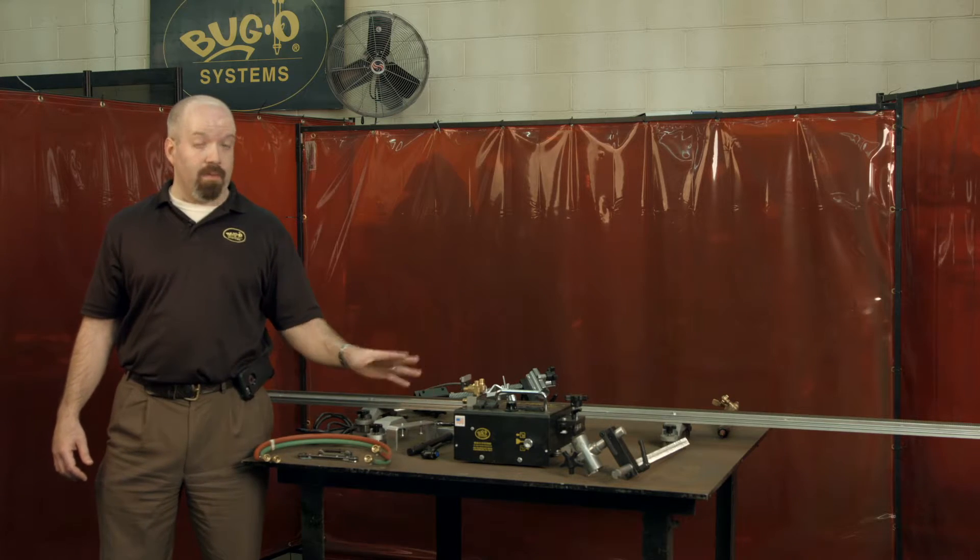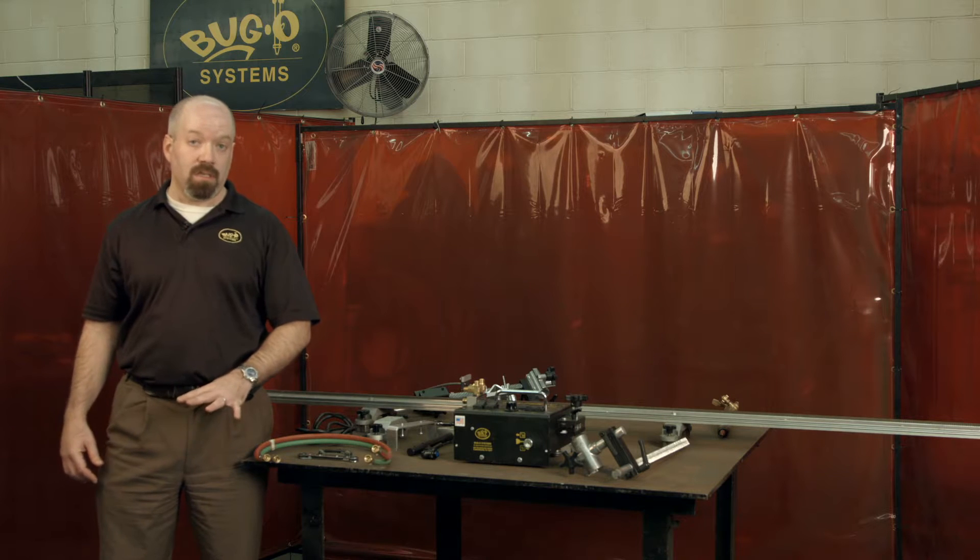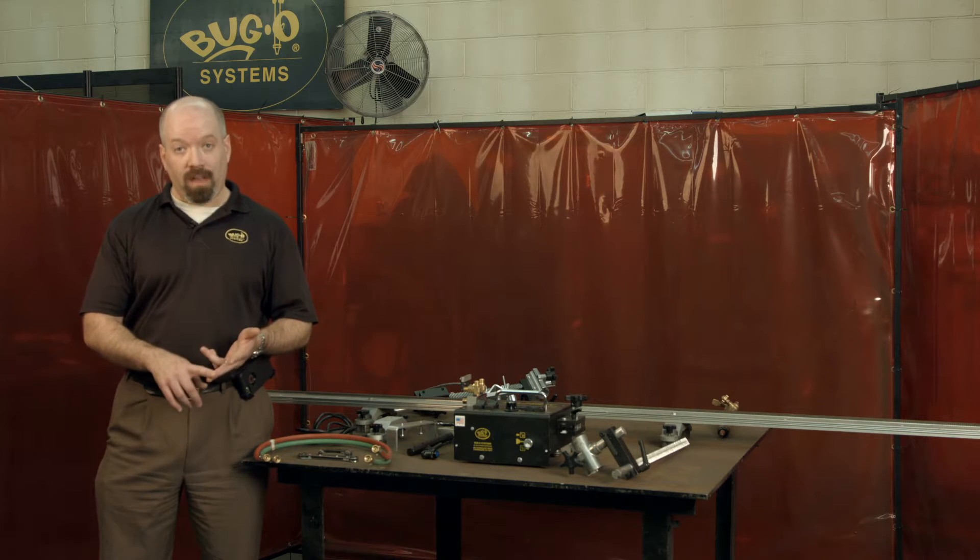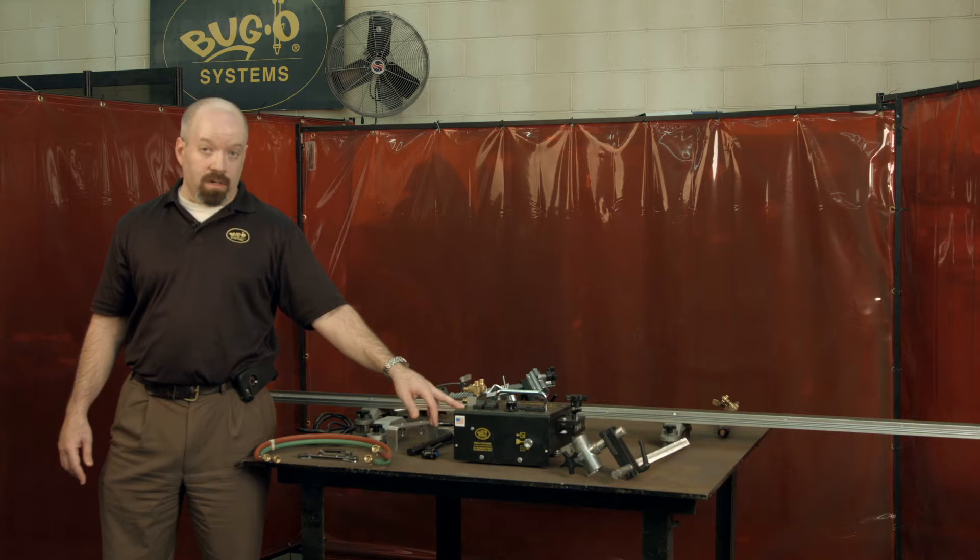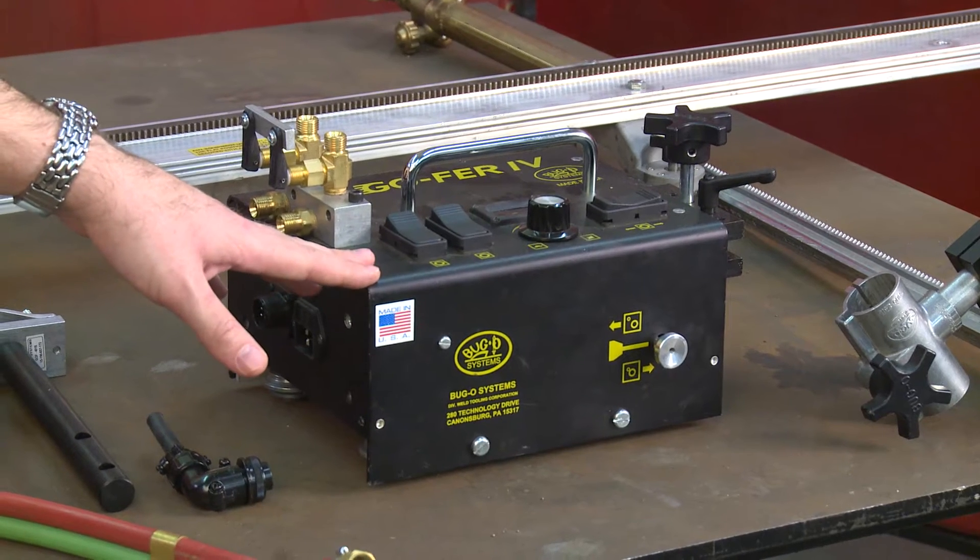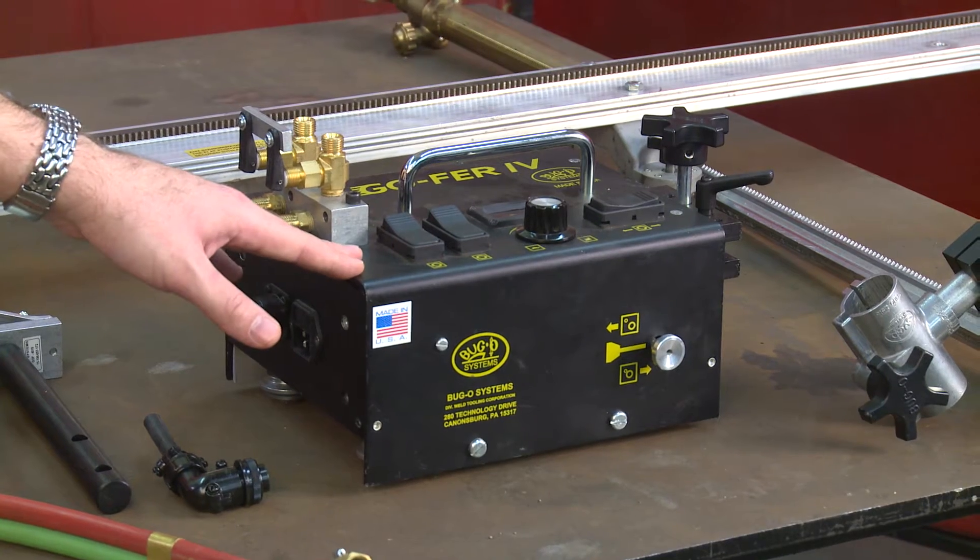Previously, you needed three different kits to cover different speed ranges for your different applications, be it welding, plasma cutting, or gouging. The new Gopher 4 runs 2.5 inches to 100 inches a minute, so it will cover the full speed range that you might need to use for a straight line cutting machine.